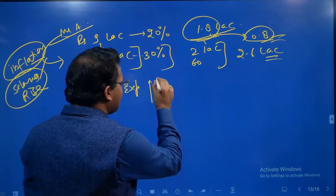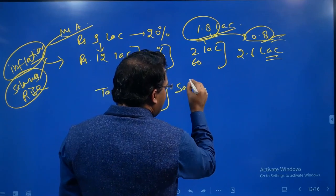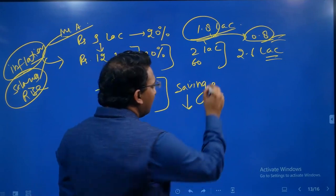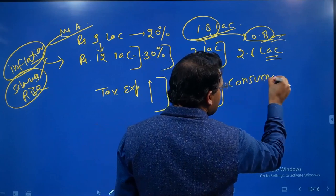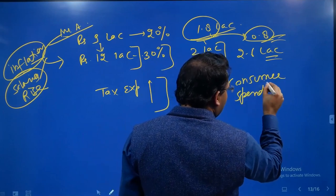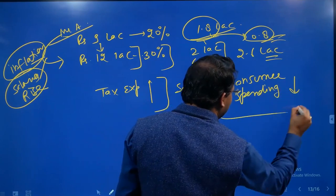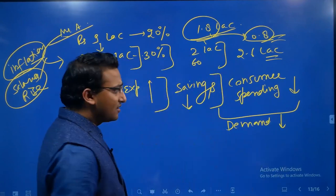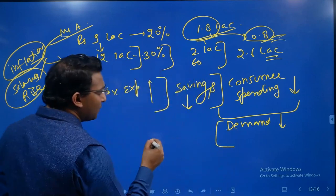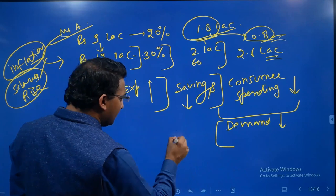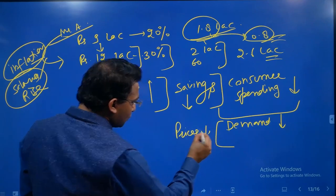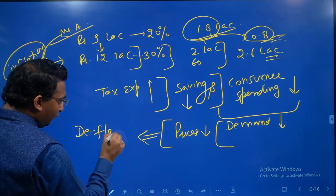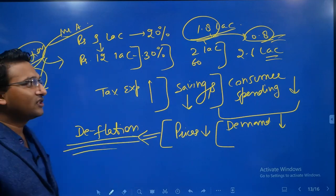Because of inflation and salary rise, the tax expenditure has increased. When tax expenditure increases, the savings in Mr. A's pocket get reduced. Reduced savings means his consumer spending capacity gets reduced. If consumer spending or purchasing power is reduced, then demand for goods and services falls. If demand is reduced but supply cannot decrease suddenly, then prices of goods and services will reduce.